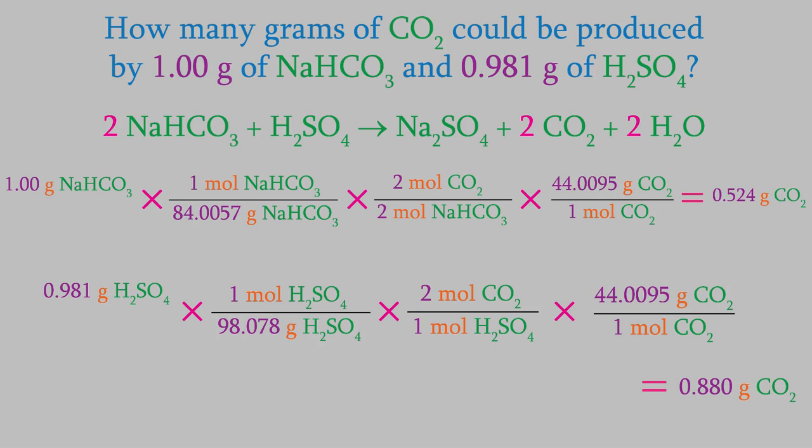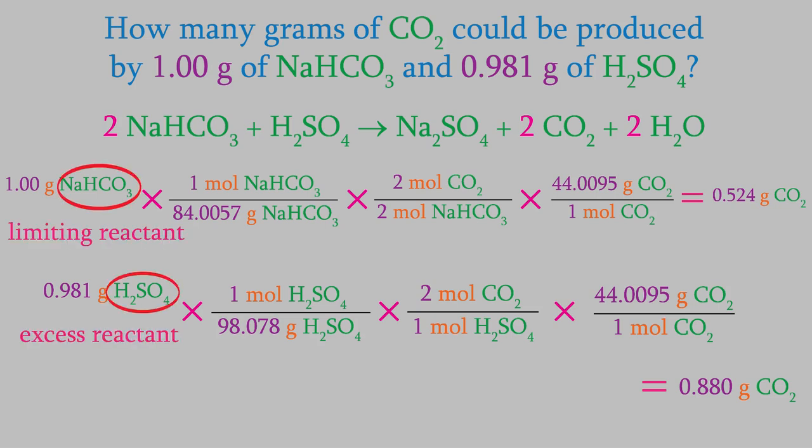The important thing to notice here is that this is different from the answer we got when we started with sodium bicarbonate. With sodium bicarbonate, we only got 0.524 grams. This tells us there's not enough sodium bicarbonate to react with all of the sulfuric acid. The sodium bicarbonate is going to run out first, and we'll only get 0.524 grams of CO2, with a little extra sulfuric acid left over. In other words, the sodium bicarbonate is the limiting reactant and the sulfuric acid is the excess reactant. Problems with limiting reactants are more time consuming because you end up doing the calculation twice, once for each reactant, to determine which one gives you less of the product.